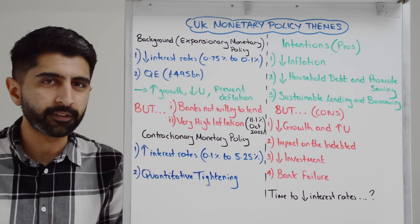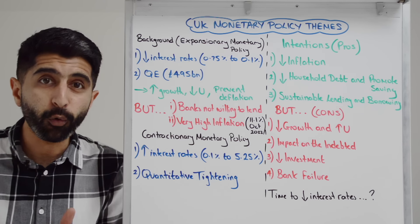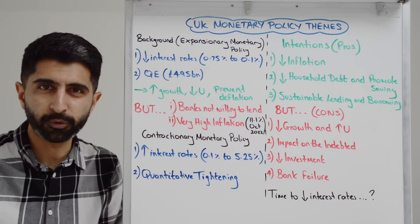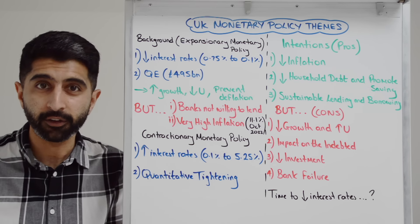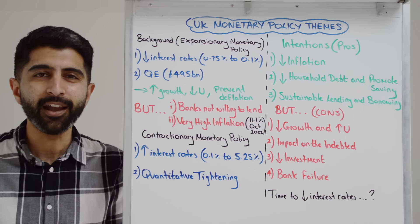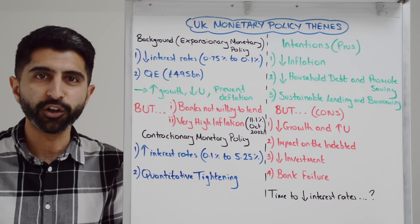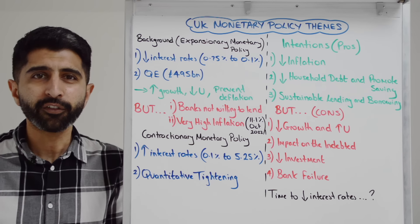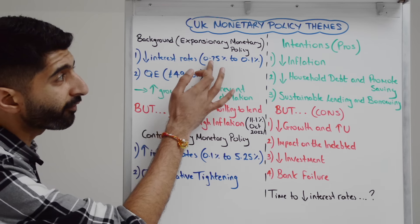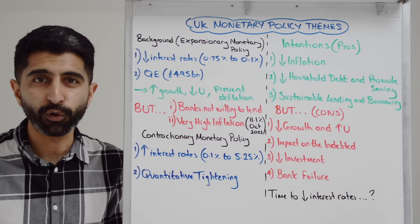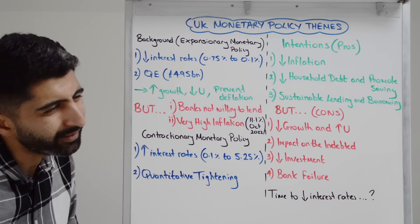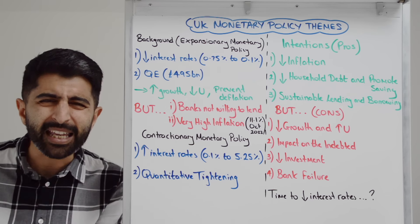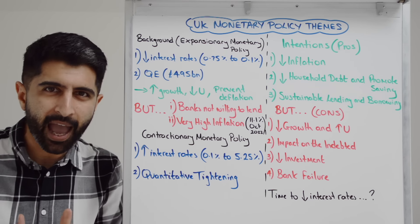But we can't ignore that there were major concerns at the same time. First of all, banks simply were not willing to lend at the very beginning of the COVID crisis — they were worried about whether workers and businesses and those industries would survive, so they weren't willing to lend until they knew exactly what the future looked like. Also, rates weren't cut from a very high level — they were cut from a very low level to a slightly lower level, limiting the overall effectiveness of rate cuts. And the huge eye-watering sum of quantitative easing sowed the seeds for extremely high inflation in the aftermath of COVID lockdowns.